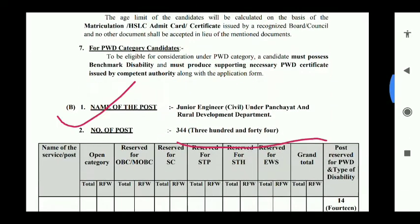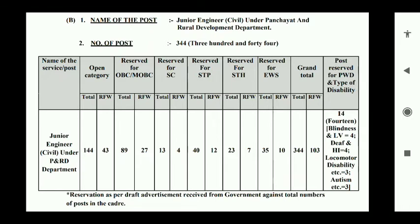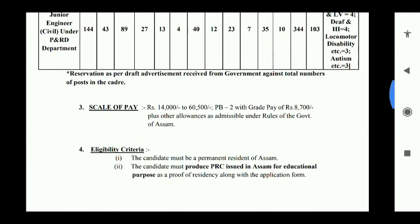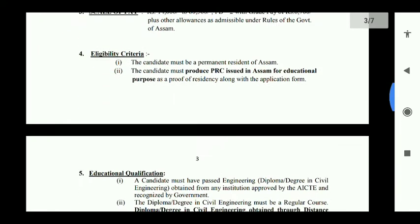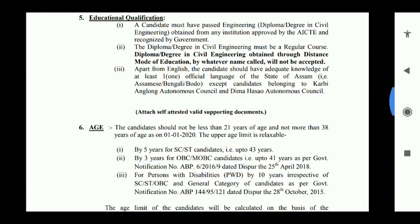The second post is Junior Engineer, Civil and Rural Development Department. The total post is as per the social list, or the reservation of the family. The scale is 7,500 and the grade is 8,700. The second post requires a permanent resident, PRC, and knowledge of Boro in Bengali. The second post requires a diploma in engineering. The age limit is also applicable.